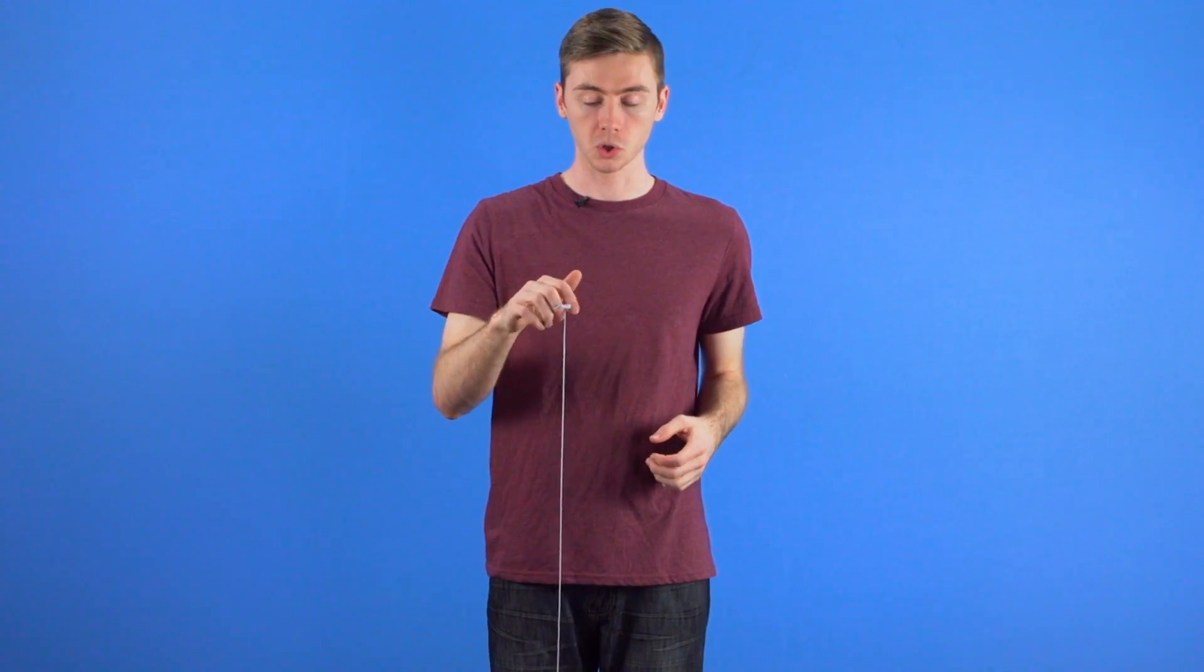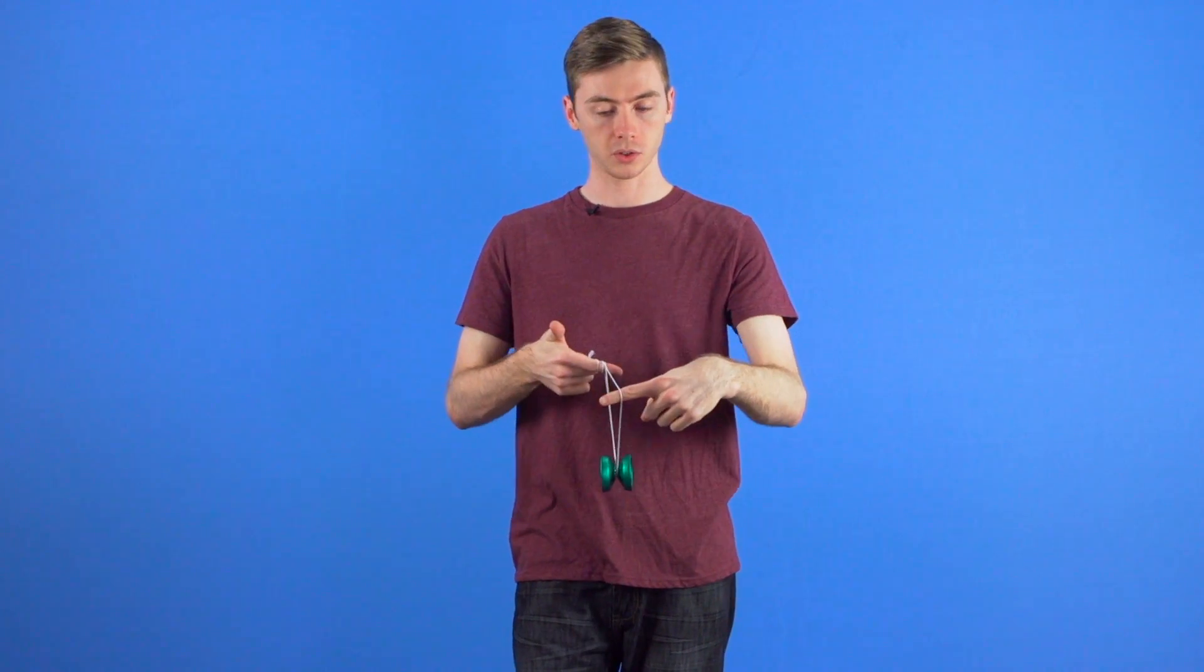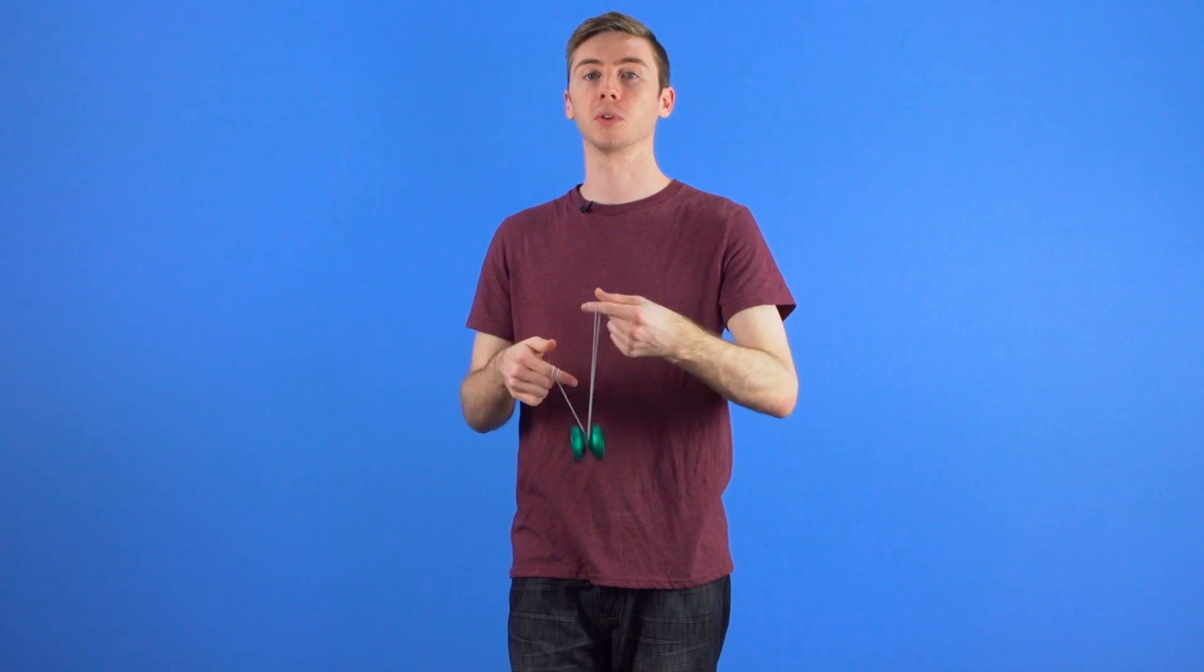The first is to shorten the string, whether it be physically through cutting the string, or artificially by using wraps and rolls to shorten the string, which we'll further explore in this video series.